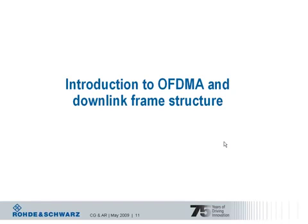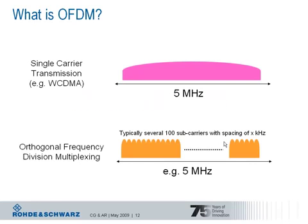Now let's have a closer look at the OFDMA multiple access scheme and the downlink frame structure for LTE. What is OFDM? In an OFDM system, the available bandwidth is subdivided into multiple subcarriers, and each of these subcarriers can be independently modulated. Typically you have several hundred subcarriers in a certain bandwidth with a constant spacing of some kilohertz. The figure shows an example for the 5 MHz bandwidth. You can easily scale the OFDM principle to higher bandwidths — like in LTE, up to 20 MHz. Comparing OFDM transmission with single carrier transmission such as wideband CDMA: since the multiple subcarriers in OFDM are transmitting in parallel, each one can transmit with a lower symbol rate, thus improving robustness for mobile propagation conditions.